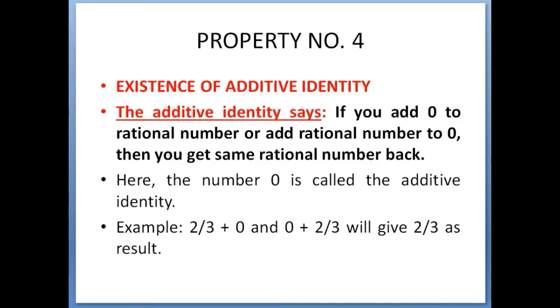Property number 4: existence of additive identity. The additive identity says if you add 0 to a rational number or add a rational number to 0, then you get the same rational number back. Here the number 0 is called the additive identity. Example: 2/3 + 0 and 0 + 2/3 will give you 2/3 as the result.